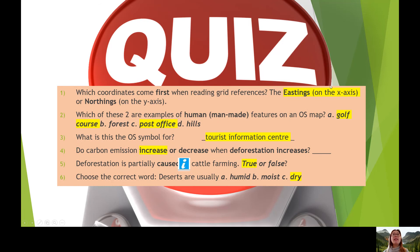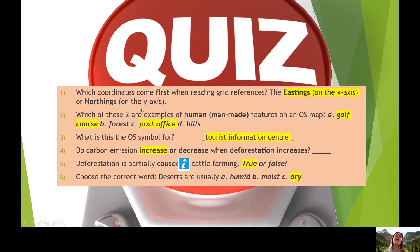Eastings coordinates always come first before Northings. We go along the corridor and up the stairs, and we'll go through some more examples of these later in this lesson so you can embed your knowledge. Now, which of these two are examples of human, man-made features on an OS map? Well, golf courses and post offices, because these don't occur naturally in the wild.